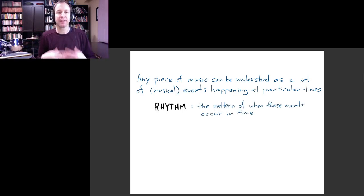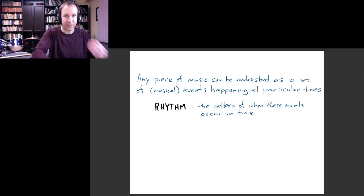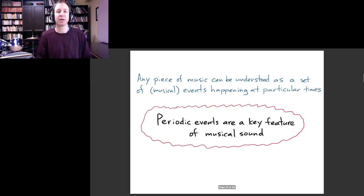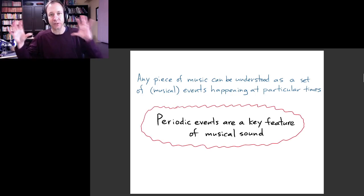The rhythm - that's one of the fundamental concepts in music - we could say that is just the pattern of when these events occur in time. That could be regular in certain parts of a piece of music or it could be more erratic. But the idea of periodic events - events that repeat with a regular period - is really crucial in various aspects of music. Periodic events, I would say, are a key feature that distinguishes musical sound from just ordinary sound.